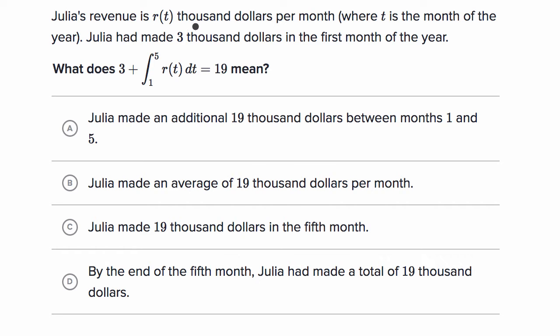Julia's revenue is r(t) thousand dollars per month, where t is the month of the year. Julia had made $3,000 in the first month of the year. What does 3 plus the definite integral from one to five of r(t)dt equals 19 mean? We have some choices, so like always, pause the video and see if you can work through it.